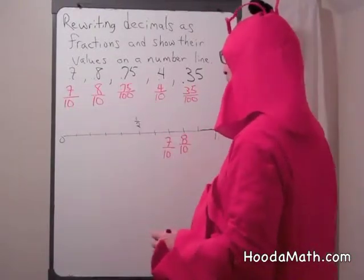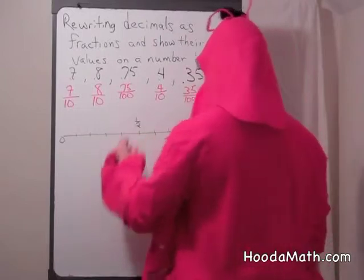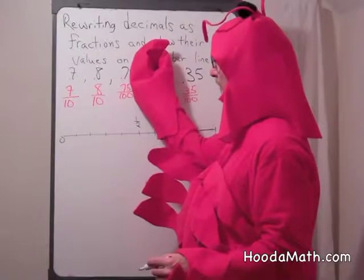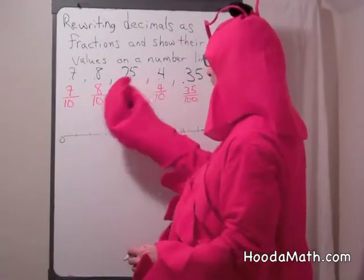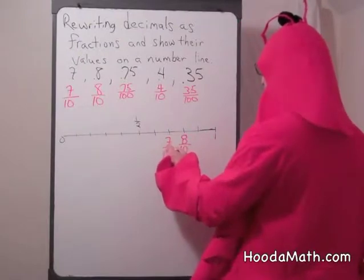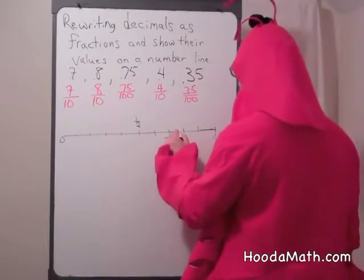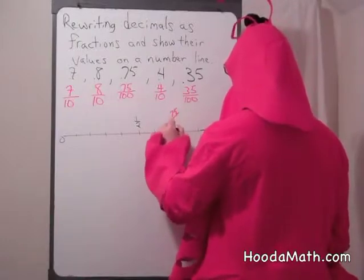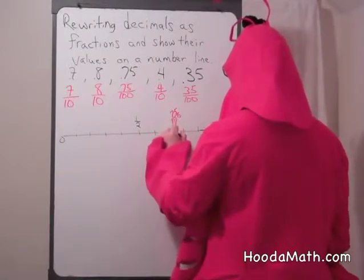Where is 75 hundredths? Well, 75 hundredths is, if we cover the 5, you can see that's 7 tenths and 5 hundredths. So it's halfway between 7 tenths and 8 tenths. 75 hundredths right there.